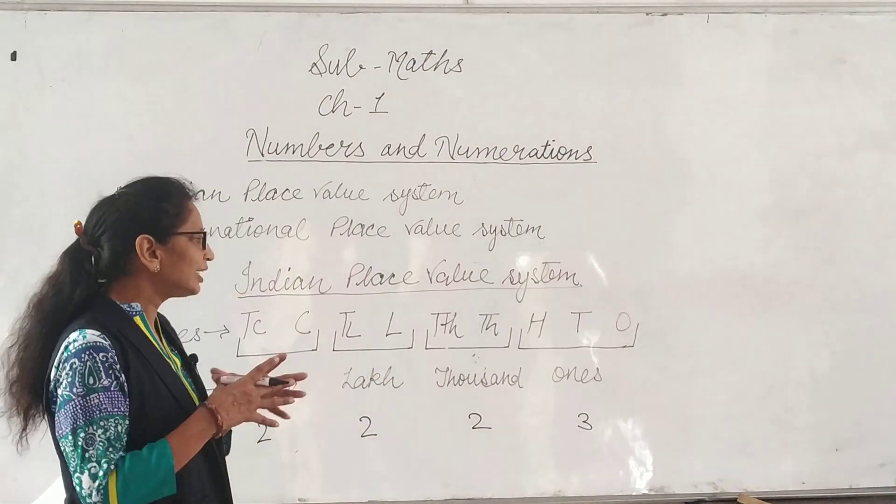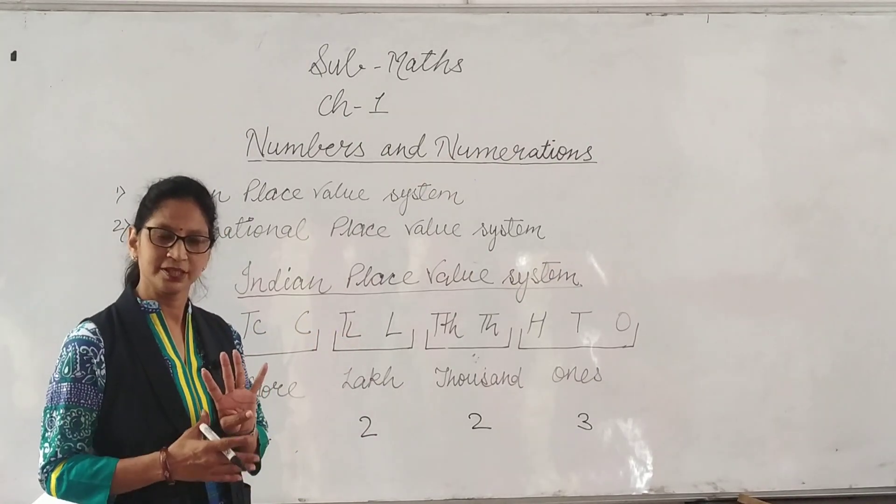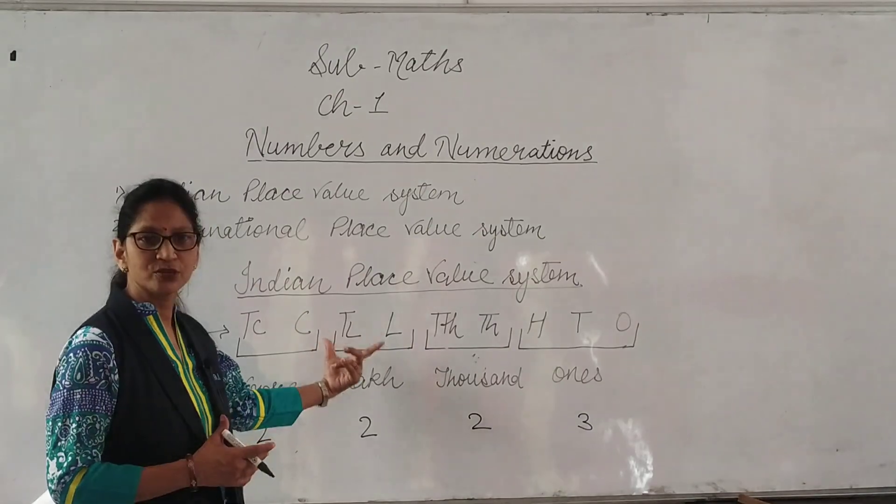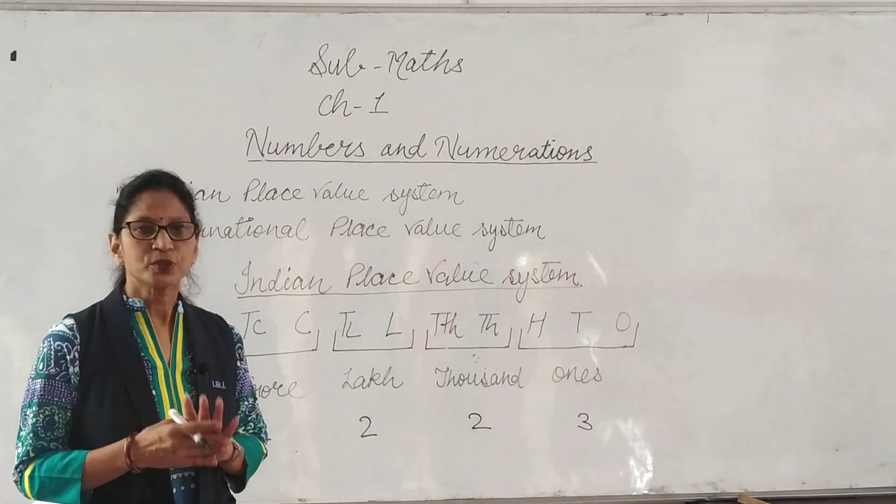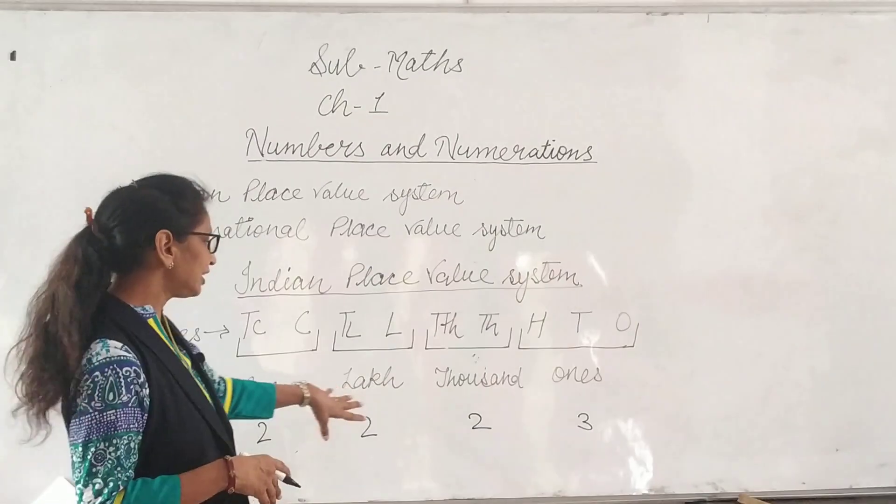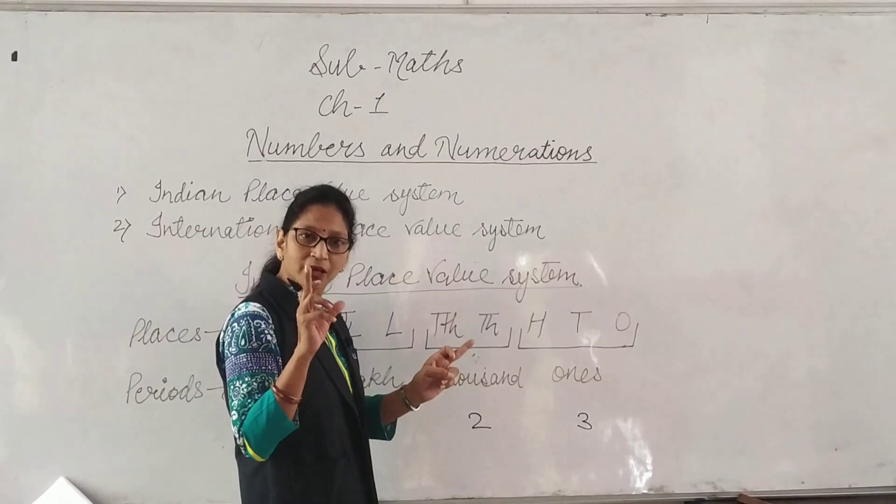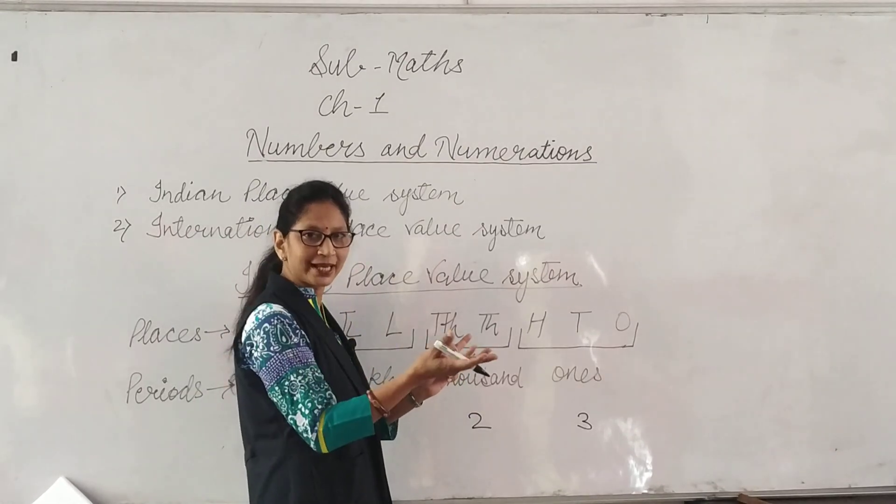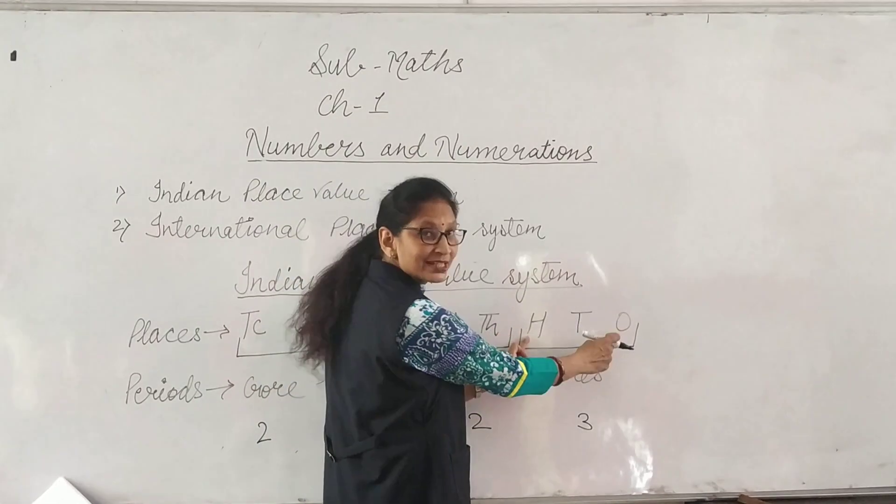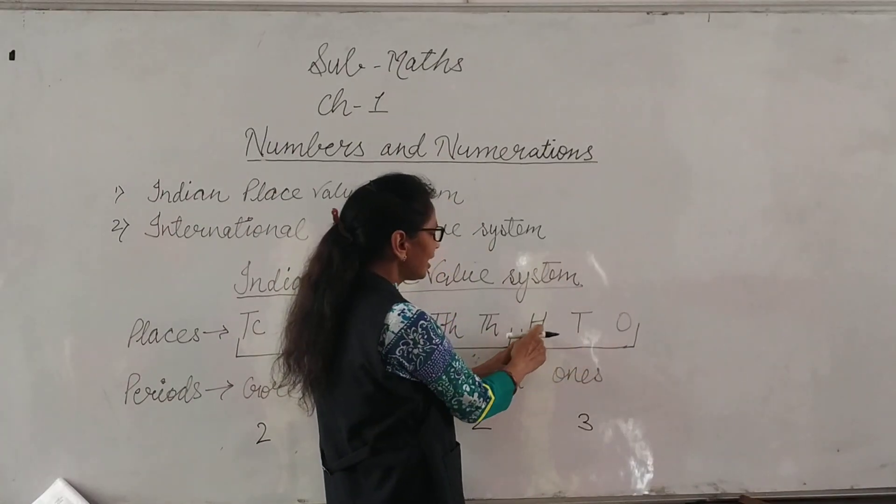Now we will divide these places into 4 groups, 4 periods. How do we divide? Remember, we always start from right side. So, we will start from 1: 1, 10, 100.